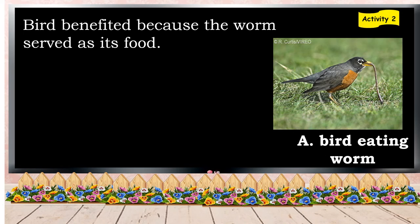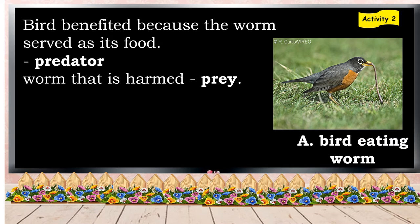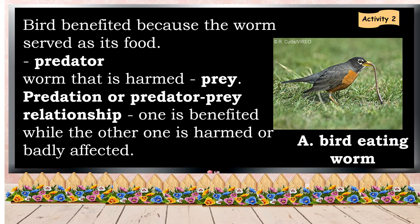In this picture, the bird benefited because the worm serves as its food. The bird is the predator because it is the bird who benefits. The one who is harmed is the worm, and it is called prey. Their relationship is called predation, or predator-prey relationship, in which one is benefited while the other is harmed or badly affected.